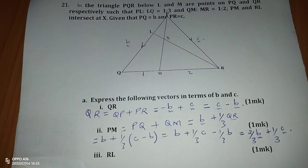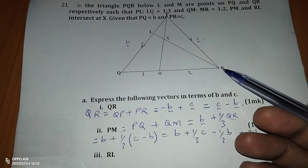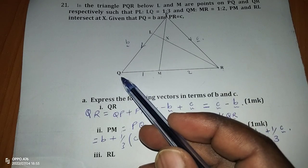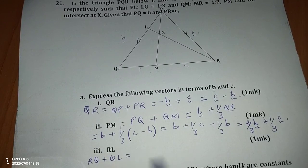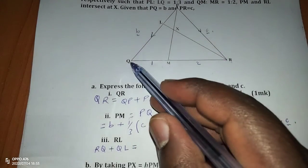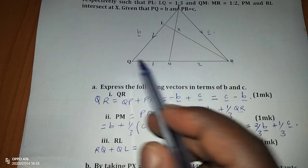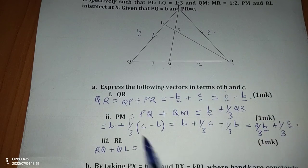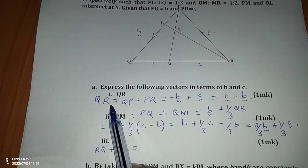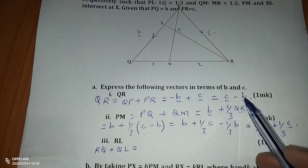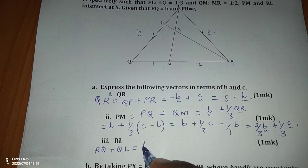Now for vector RL. I will follow the route RQ then QL. So RL equals RQ plus QL. We already know QR equals C minus B, so RQ is the reverse: positive B minus C. Therefore RQ equals B minus C.